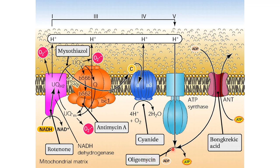Oligomycin is a particular antibiotic that also acts as a poison of ATP synthase or complex number 5, so there will not be any production of adenosine triphosphate. This protein here is the antiporter for adenosine diphosphate and adenosine triphosphate. This antiporter allows the ATP produced in the mitochondrial matrix to exit the mitochondrion, and the ADP present in the cytoplasm to enter the mitochondrial matrix so that it can be transformed into ATP. By giving atractyloside, this antiporter will be inhibited, and therefore the levels of ATP will also go down because there will not be any ADP able to enter the mitochondrial matrix.